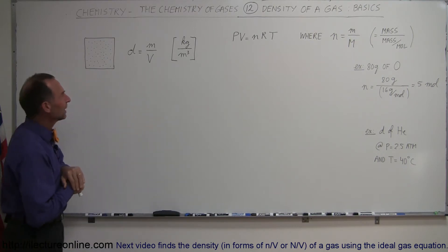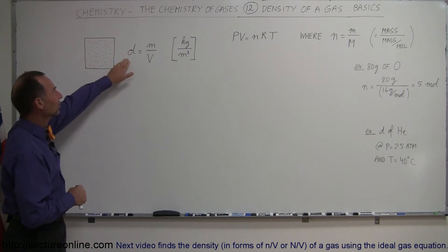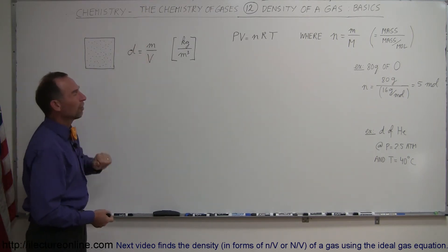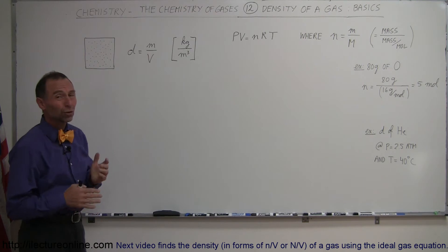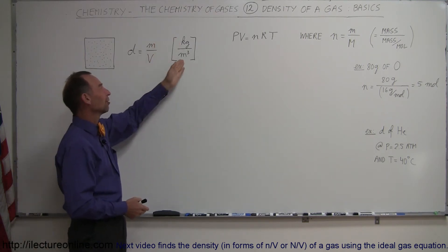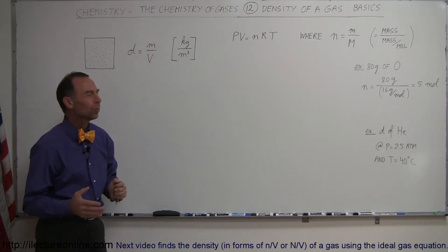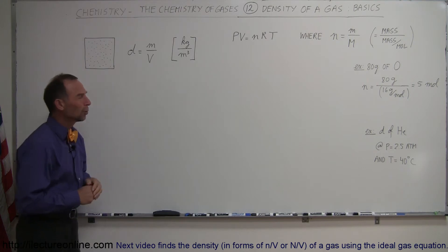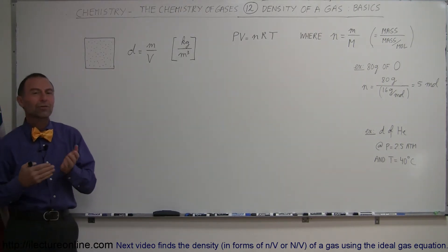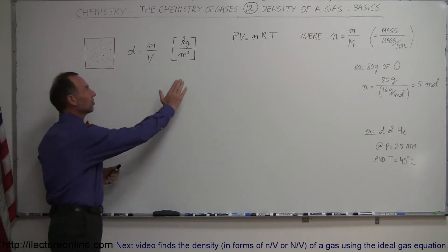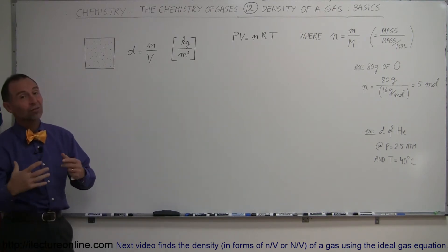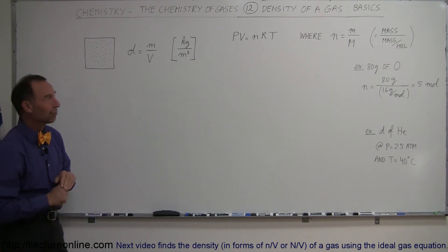Traditionally, density is defined as the mass per unit volume. The units for that would be kilograms of gas per cubic meter. In chemistry, we typically express volume in liters, but as long as we know these are the standard units, we can always convert back to liters and grams if we have to.